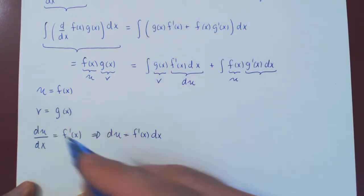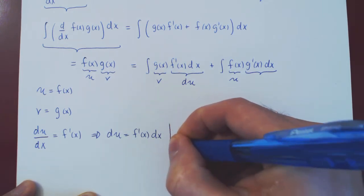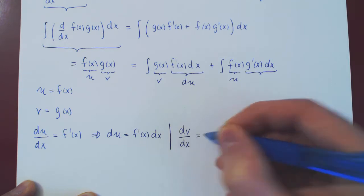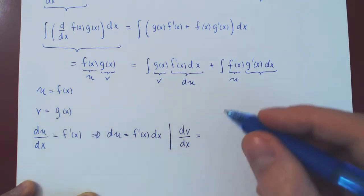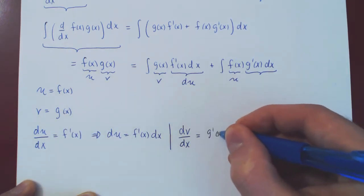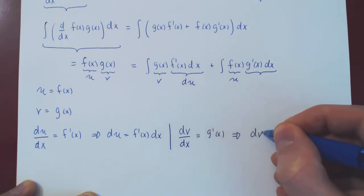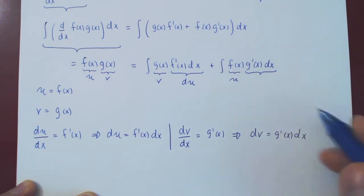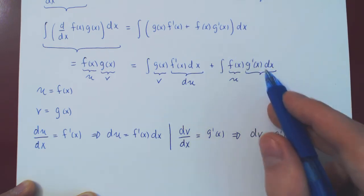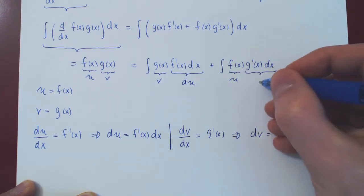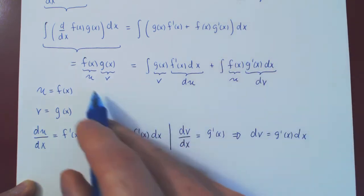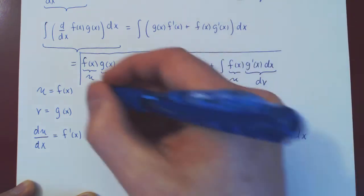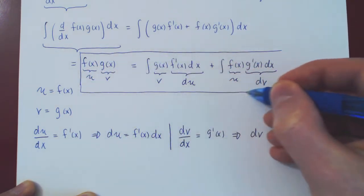We'll play the same game with v. v is also a function of x, so differentiating v with respect to x gives g'(x). Multiplying both sides by dx, dv equals g'(x) dx. That's the leftover term — g'(x) dx is just dv. So now we can rewrite this equality in terms of u, v, du, and dv exclusively.